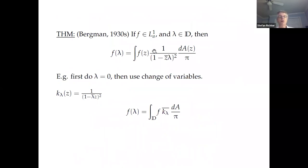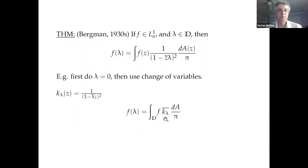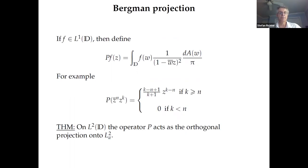The reproducing kernel property: for any L2_A function f, you get the reproducing property f(λ) = ∫f(z)K_λ(z) dA. You can verify it for λ equals 0 — it's just the mean value property — and then use a change of variables. We call this function K_λ the reproducing kernel, giving the formula f(λ) = ⟨f, K_λ⟩.